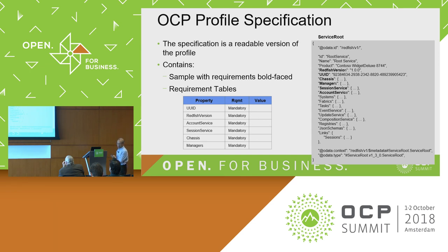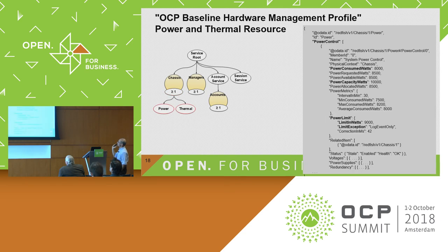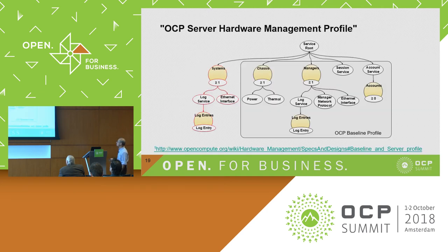When you look at the wiki, you'll see two Word documents — interpretations of the profile. This is the baseline. I go through each one. For example, this is the chassis resource and what is required — serial number. This is the power and thermal resource underneath the chassis — I've said I want power usage and power limits available. In a previous discussion before lunch, there was discussion about power limits being set, and this is how you do it: you just go set your limit in once.